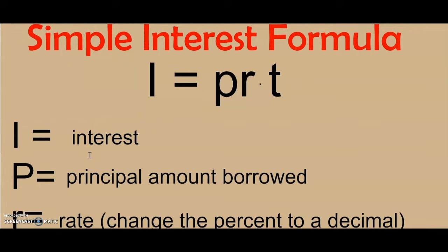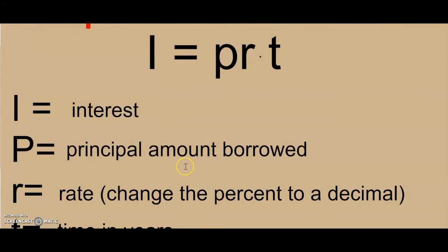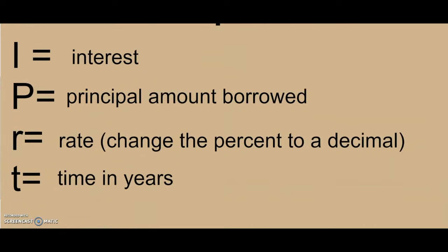I is going to stand for the interest, which we are usually looking for. The P is the principal amount borrowed or invested. The R is the rate. We will usually see this as a percentage, so we are going to change the percent to a decimal. And the time is T, and we usually see this in years.